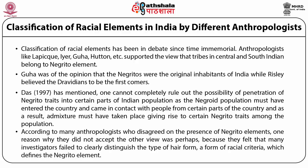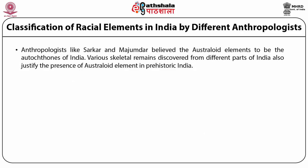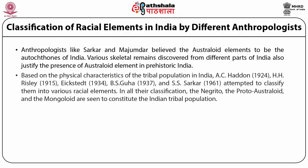According to many anthropologists, most agreed on the presence of Negrito elements. One reason why they did not accept the other view was perhaps because many investigators failed to clearly distinguish the type of hair form — a form of racial criteria which defines the Negrito element. Anthropologists like Sarkar and Majumdar believed the Australoid elements to be the autochthones of India. Various skeletal remains discovered from different parts of India also justify the presence of Australoid element in prehistoric India. Based on the physical characteristics of tribal population in India, A.C. Haddon, Risley, Eickstedt, B.S. Guha, and Sarkar attempted to classify them into various racial elements.